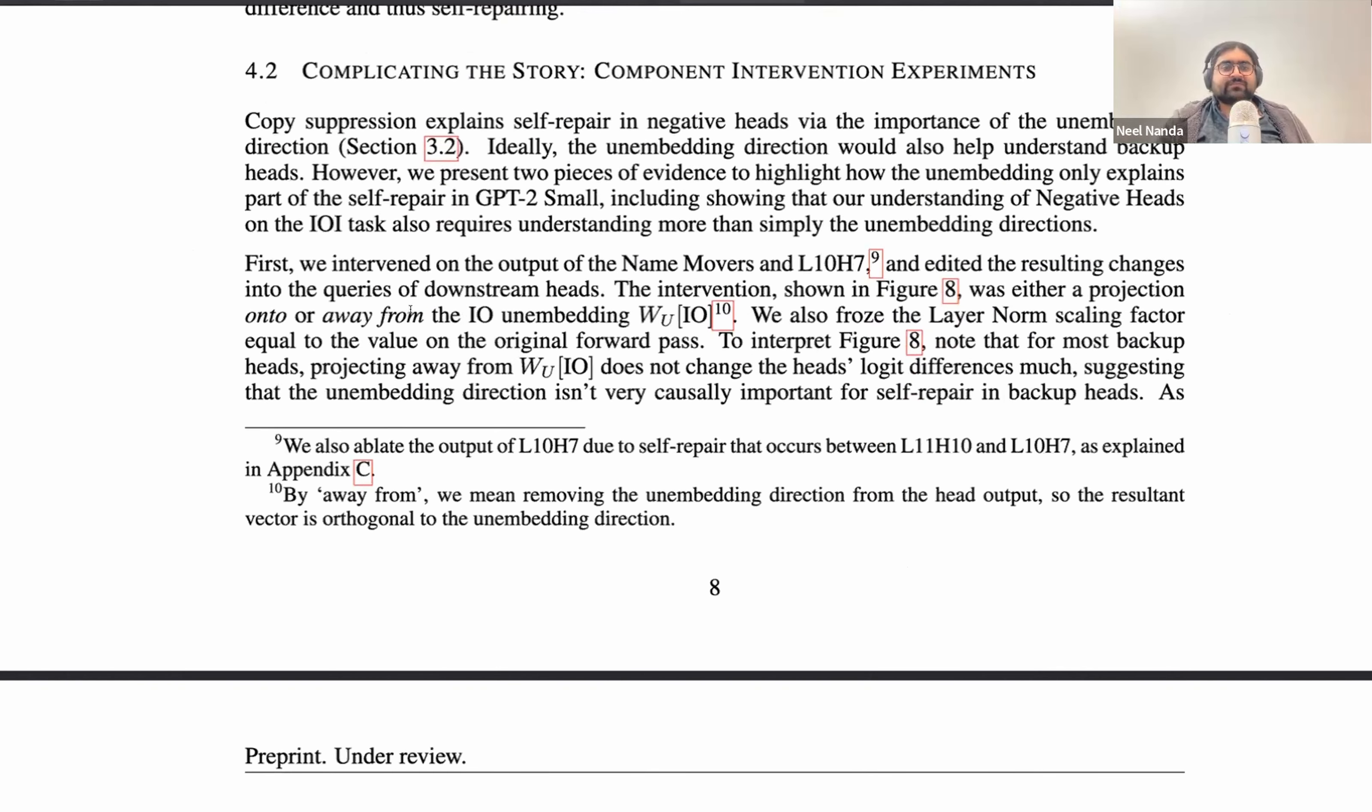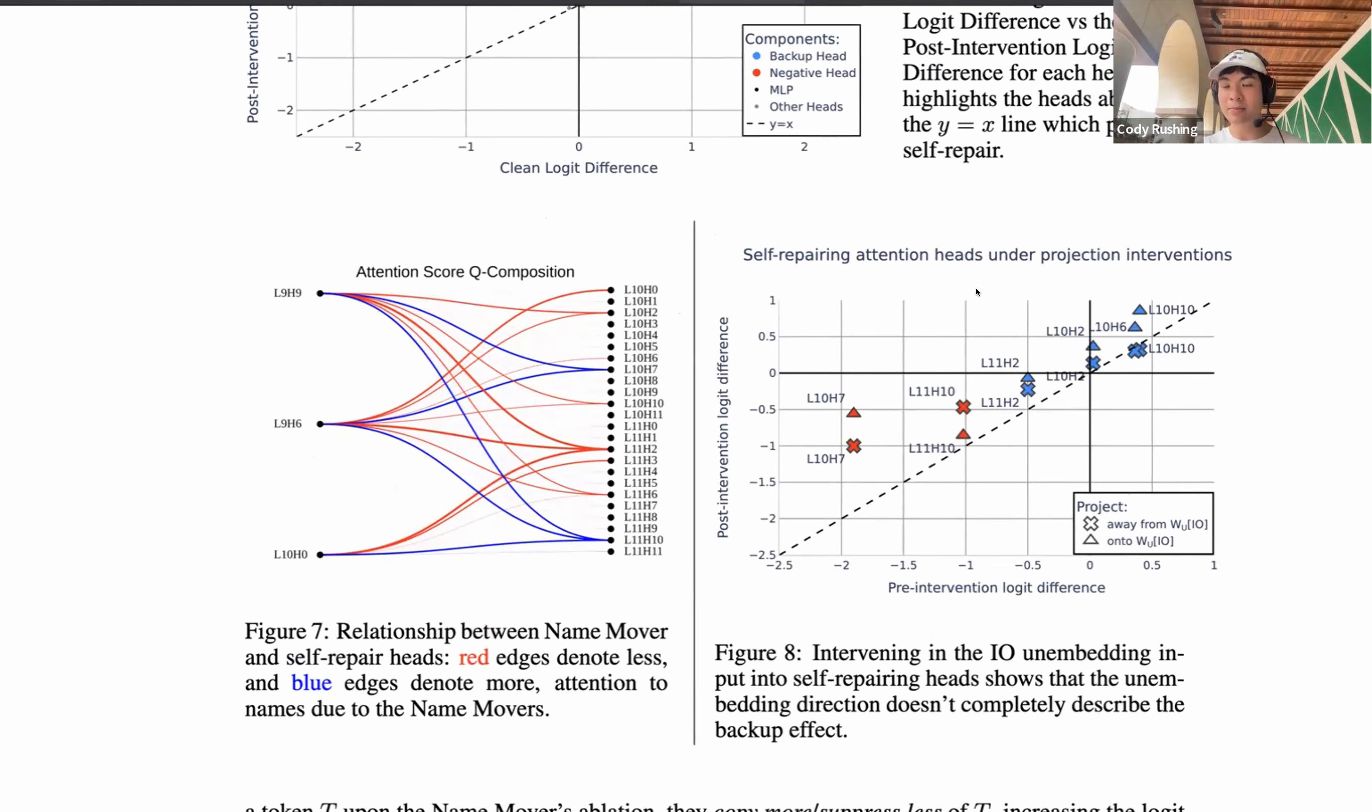And where did the 39% figure come from? So we got this figure that copy suppression explained 39% of all the self-repair in the model. And this actually isn't too complex of a result. Basically, we're just looking to see what is the change in all the downstream components as a result of ablating the layer 9 name mover heads. And we take the individual changes in logit difference, which is like the distance from every single head down to the y equals x line, and then seeing what percent of this is the entire self-repair.